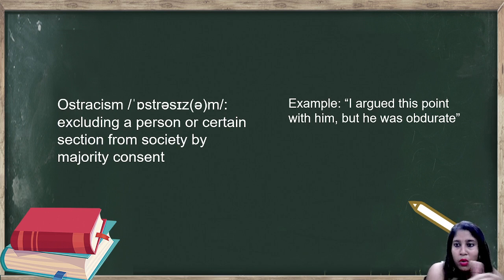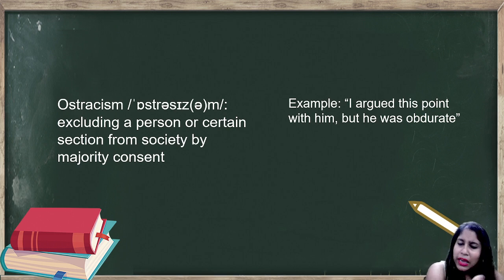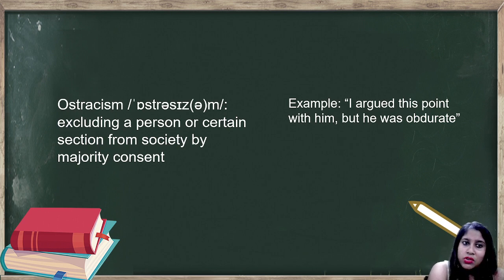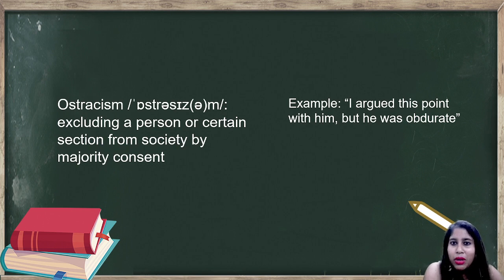You can use it in a sentence like: the ostracism that a person faced was very unfortunate. So whatever ostracism any person had to face — jo bhi ostracism kisi insaan ko face karna pada — was very demotivating and disempowering.